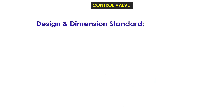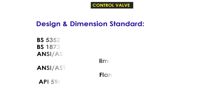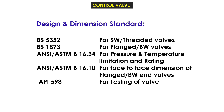Design and dimension standards for control valves include: BS5352 for socket-weld and threaded valves; BS1873 for flanged and butt-weld valves; and ANSI/ASTM B16.34 for pressure and temperature limitations and ratings.